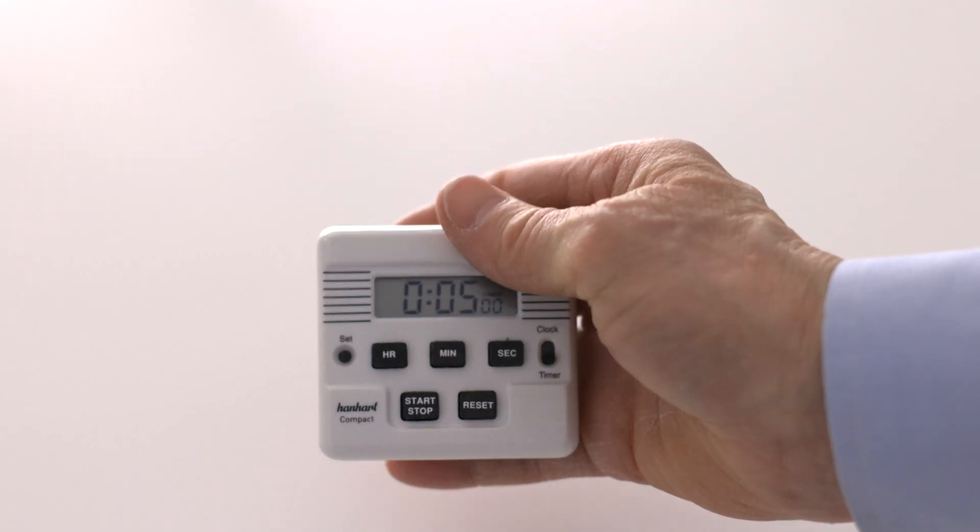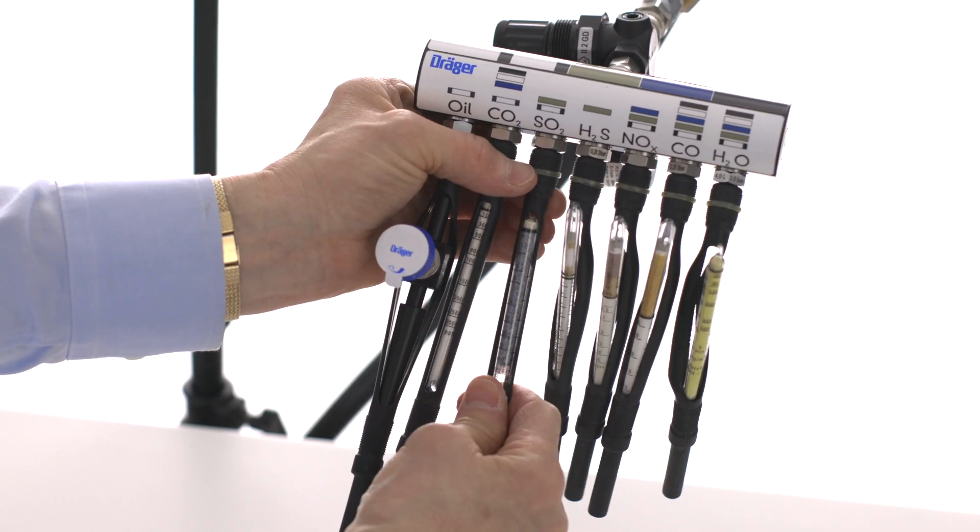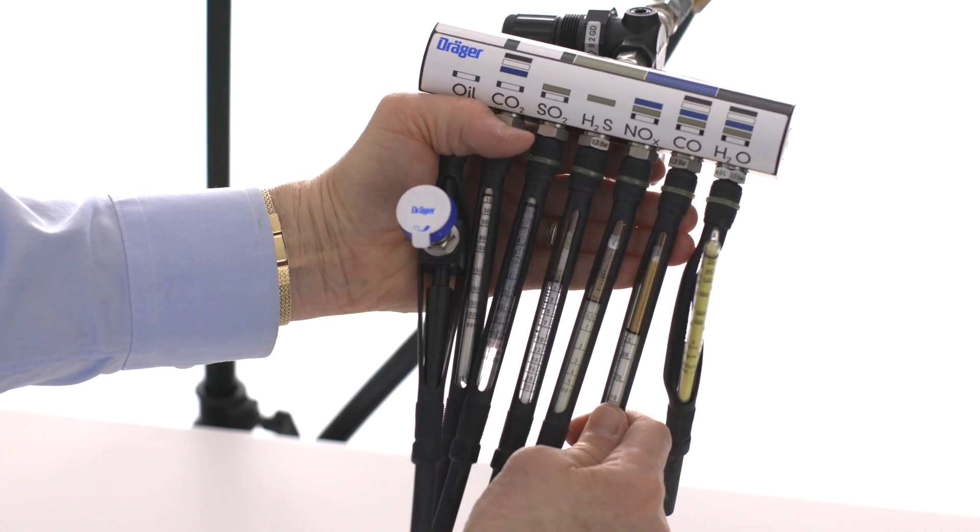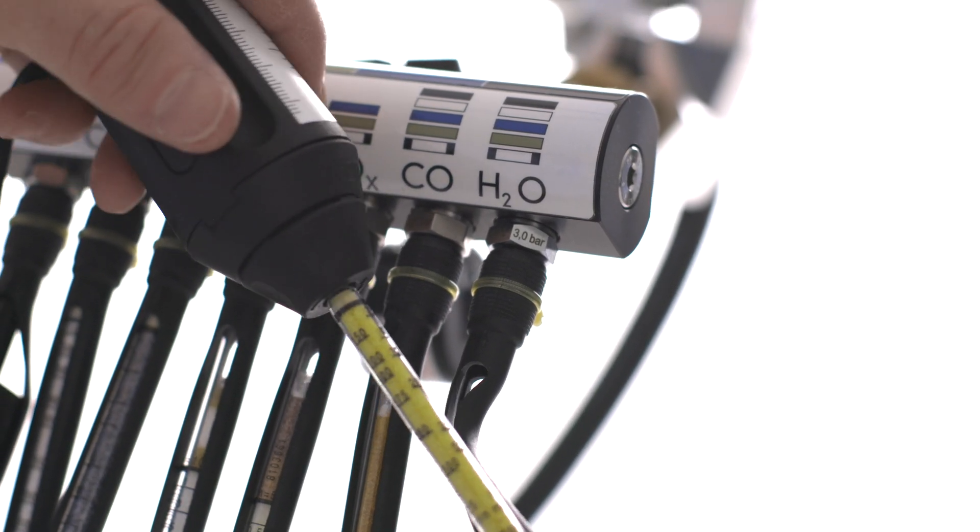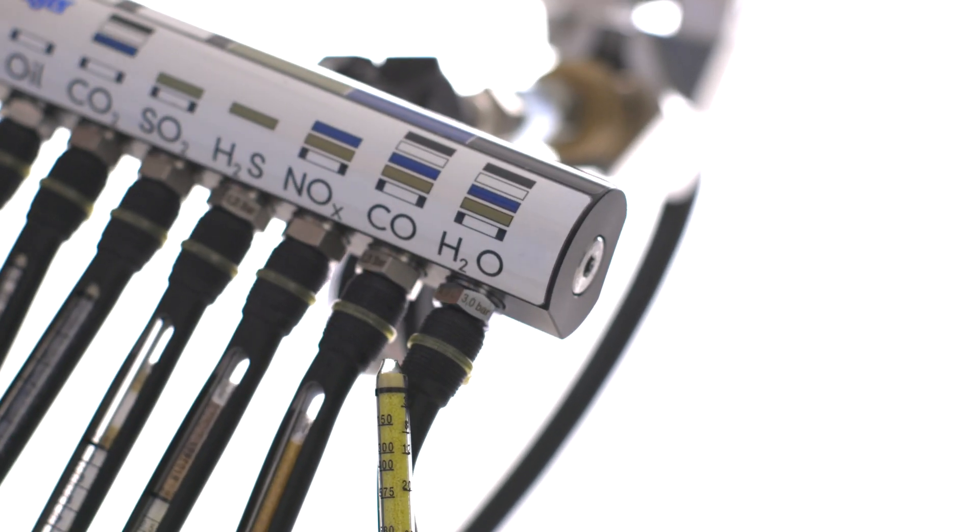Start a 5-minute timer and immediately connect the oil impactor and the tubes, except the water vapor, to the inlet of the holder, then use the tube opener to remove the tip from the water vapor tube and connect to the inlet of the holder.